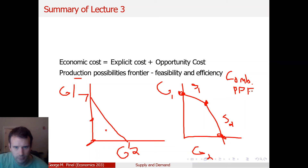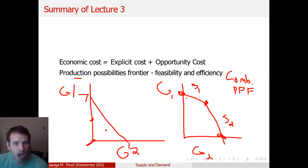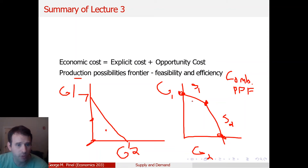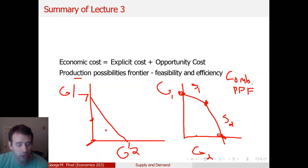For two people, we typically specialize — one person has comparative advantage in one good, the other in the other good. They'll have two different opportunity costs depending on who's doing what. If they're both producing good one and you move to producing one unit of good two, someone has to give up a unit of good one. That should be the person who's more effective at producing good two — the person with comparative advantage in good two.